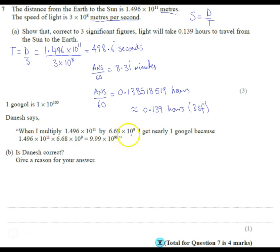When we multiply these two numbers, Danesh nearly gets a googol. So if you multiply 1.496 times 6.68, just multiplying the numbers, you get 9.99328, which is quite close, so that bit's okay.